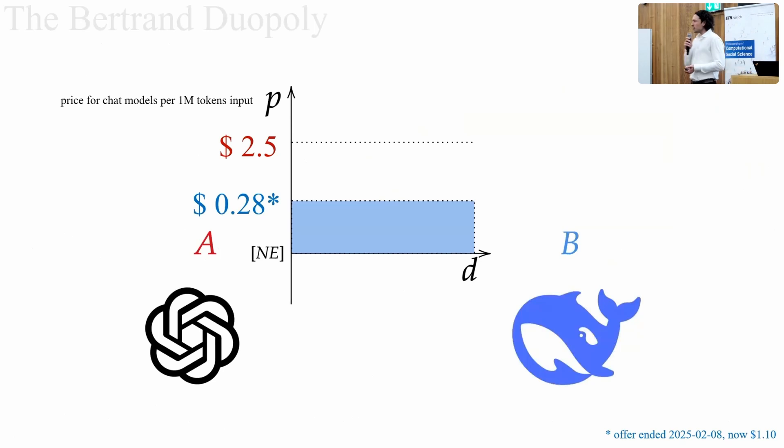Let's consider a market duopoly, a simple two-player game where, in our scenario, OpenAI and DeepSeek are deciding on the pricing for their chatbot. These are priced per million tokens. Currently, OpenAI charges about $2.5 per million tokens. DeepSeek released a few weeks ago at about $0.28 per million tokens.